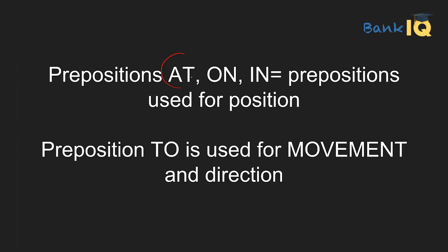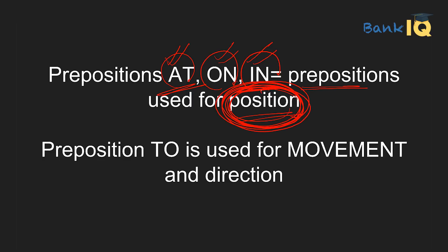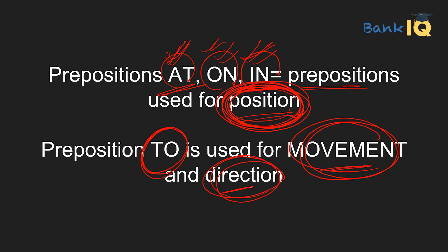Our prepositions are at, on, in — we use these prepositions for position. When we tell about position, at, on, or in: 'I am at the mall' or 'I am in that particular place.' To represent movement as well as direction, we will focus on preposition 'to.' This is the first important aspect which we need to focus on.